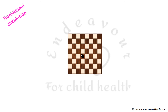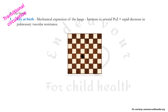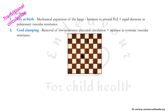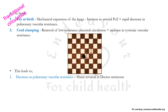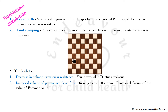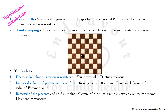During transition from fetal to neonatal life, two major events occur. First, the baby cries at birth, leading to mechanical expansion of the lungs, increase in arterial PO2, and a rapid decrease in pulmonary vascular resistance. Second, cord clamping leads to removal of the low-resistance placental circulation and an increase in systemic vascular resistance. These result in three consequences: decreased pulmonary vascular resistance causing shunt reversal left-to-right in the ductus arteriosus, which eventually closes forming the ligamentum arteriosum; increased pulmonary blood flow returning to the left atrium causing functional closure of the foramen ovale; and cord clamping causing closure of the ductus venosus, which becomes the ligamentum venosum.